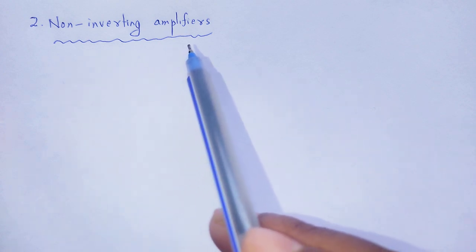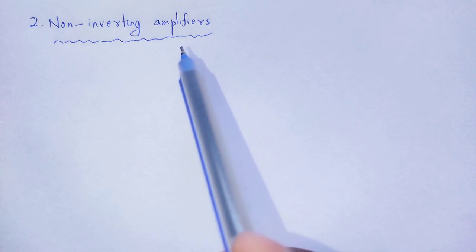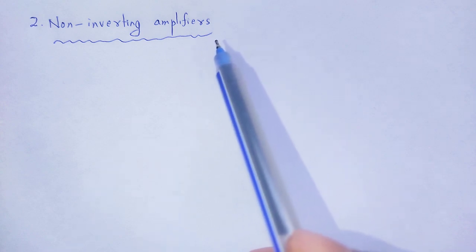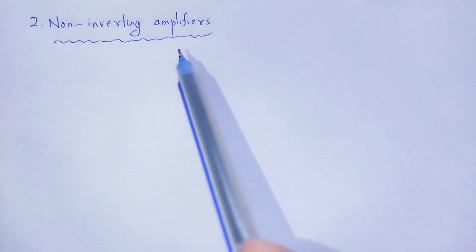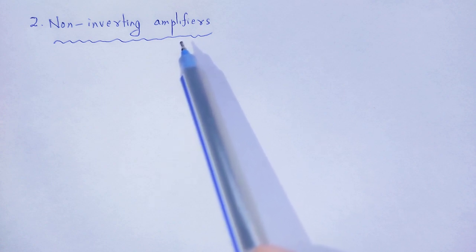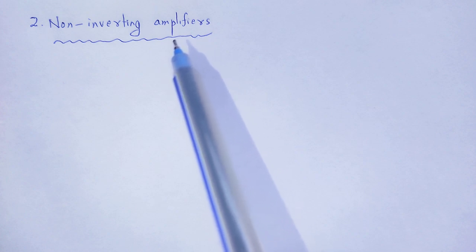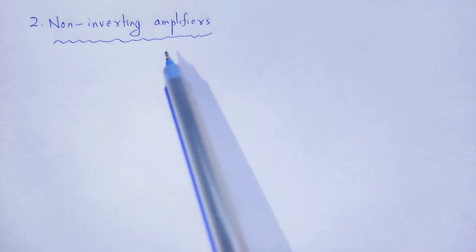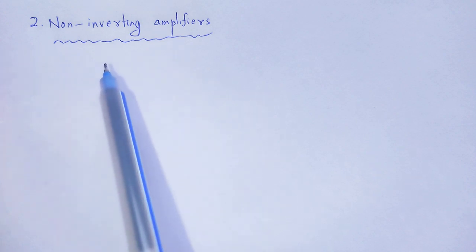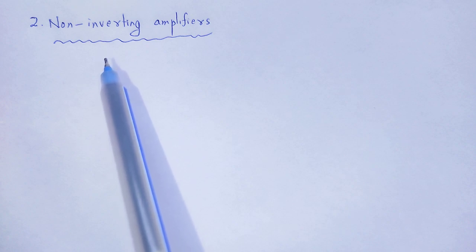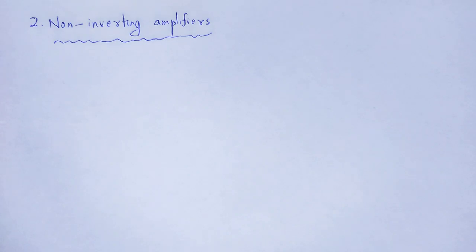A non-inverting amplifier is that type of amplifier in which if we provide a signal to the input, then at the output we have the amplified signal, but that signal is in the same phase as that of the input. That kind of amplifier is called a non-inverting amplifier. This non-inverting amplifier can be made by using an op-amp, and in this video we discuss how a non-inverting amplifier is created using an op-amp.